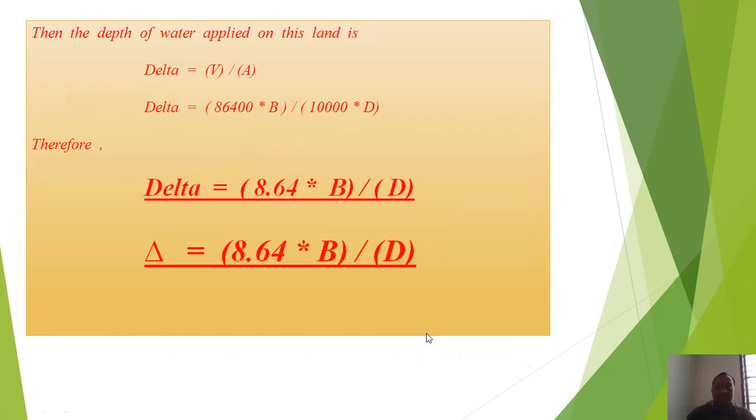Then the depth of water applied on this land is delta equals volume upon area. So delta equals 86,400 × B divided by 10,000 × D. Therefore, delta equals (8.64 × B) / D. This is the relation.